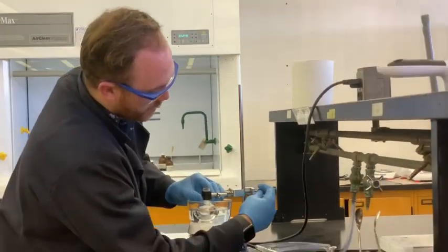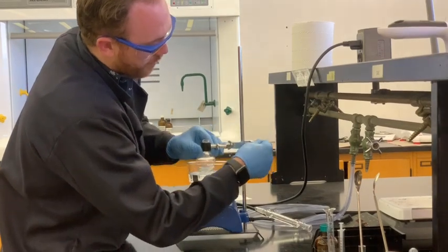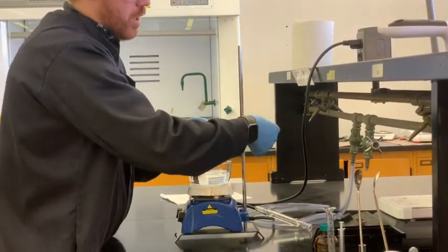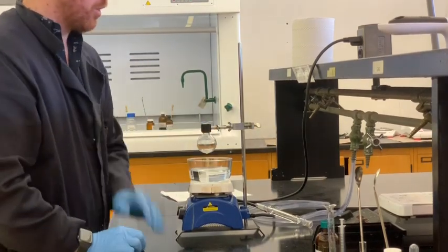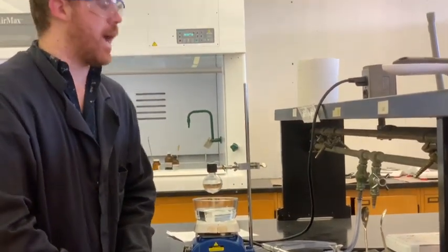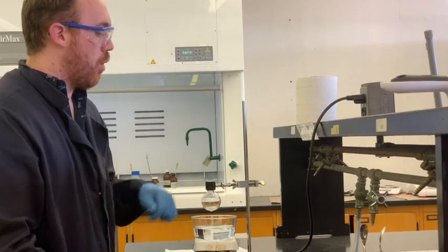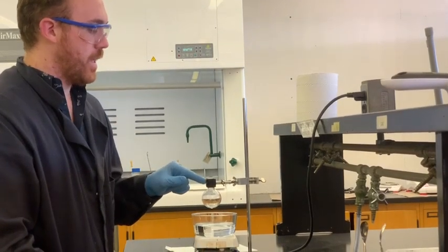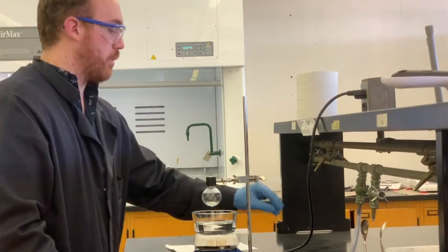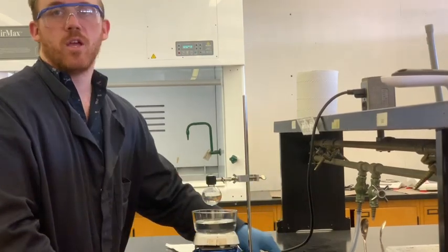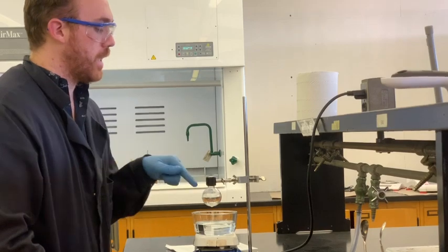You always want to make sure that you can kind of visualize what you're going to do if you have to stop the reaction really quickly. One of the biggest reasons that I like to always clamp the flask instead of clamping the condenser is it's much safer to be able to just remove the condenser when you need to. You have to put something into the flask.